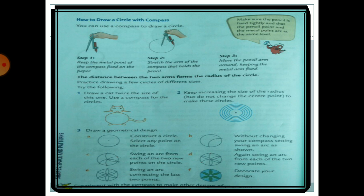Now, how to draw a circle with a compass. We already know this from second and third grade. The distance between the two arms of the compass forms the radius of the circle.